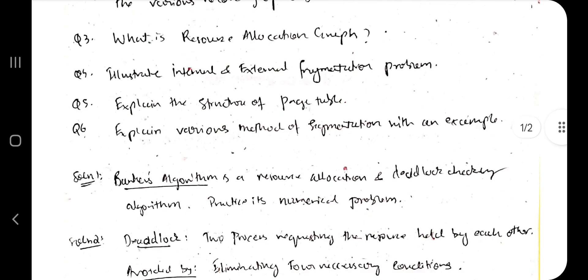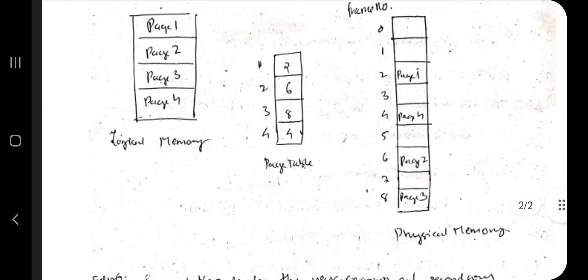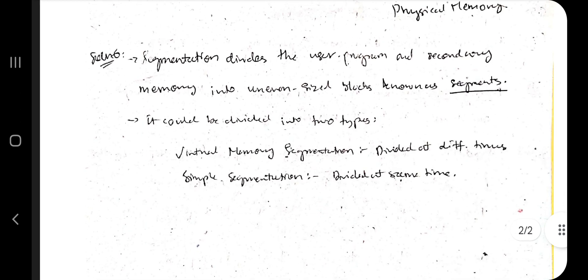The next one is explain the various methods of segmentation with an example. What is segmentation? Segmentation means dividing into segments, uneven sized blocks. There are two types: virtual memory segmentation, simple segmentation. The basic difference is virtual memory gets divided at different times whereas simple divided gets divided in same time. So make sure you know all of these questions very well before appearing for exam.